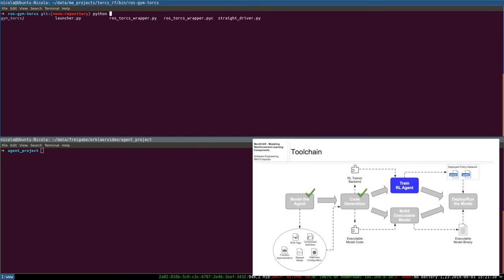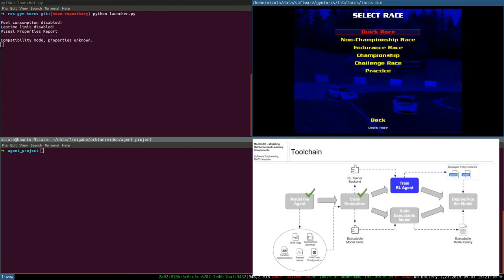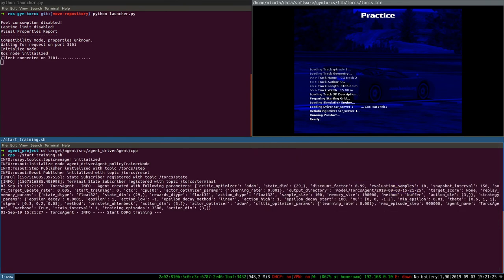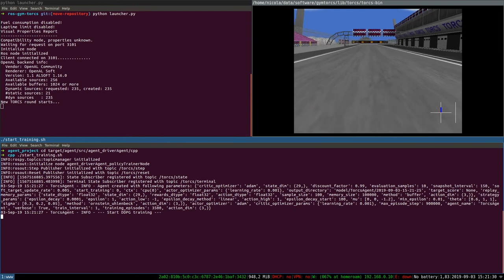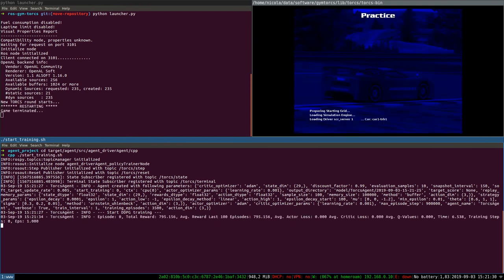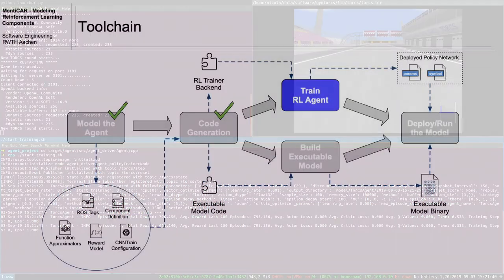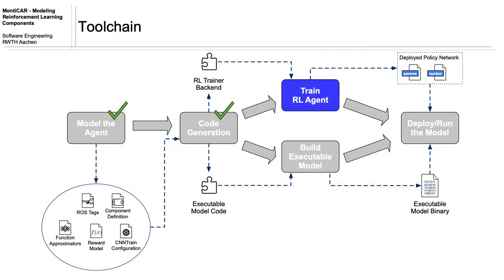We can now start the training of the policy network. First, we start the application that represents the environment. After that, we execute the generated backend trainer with the script. The training can be interrupted at any time by Ctrl-C. The current network states and the replay buffer are then stored to a session file. The training is continued by calling the trainer script again. After the successful training, the trainer backend stores the current weight parameters of the policy network and a symbol file that describes the computation graph of the policy network to an output directory.